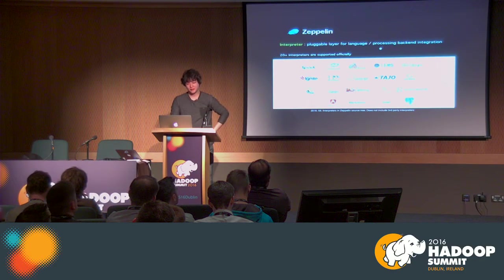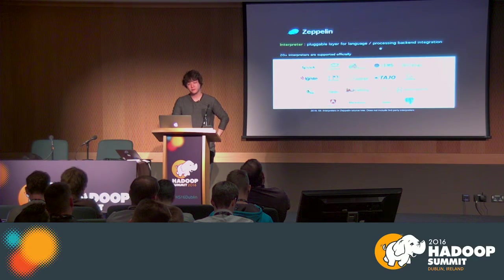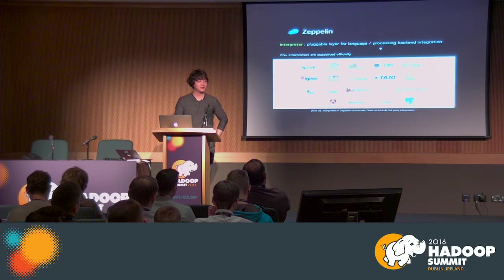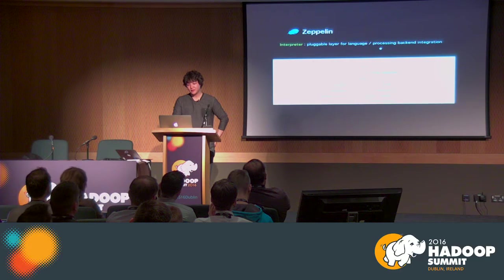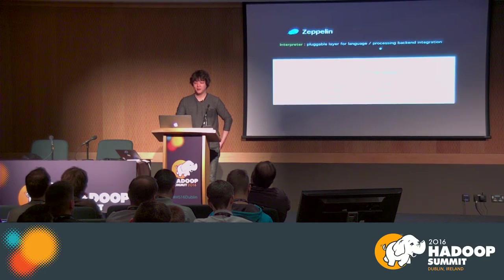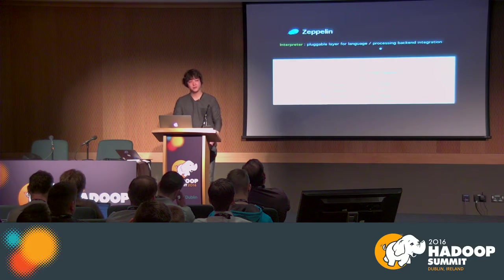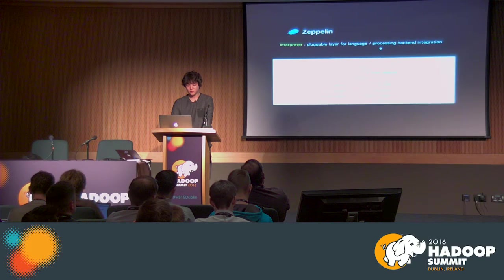Zeppelin supports many different backends — we have a little more than 20 different backend systems officially, and unofficially there are many more third-party backends. Zeppelin's term for a backend is 'interpreter.' The interpreter is Zeppelin's backend integration and it's pluggable. If you have your own interpreter implementation, without recompiling or repackaging Zeppelin, you can just drop your interpreter library into the Zeppelin folder and Zeppelin will automatically load it.